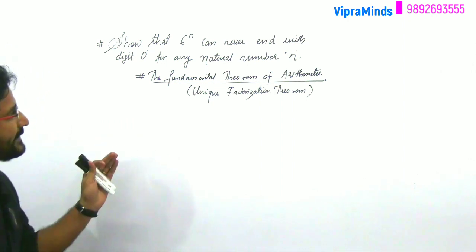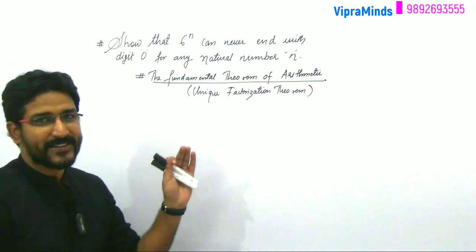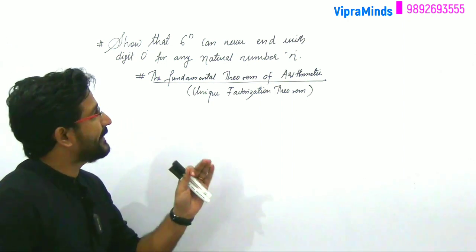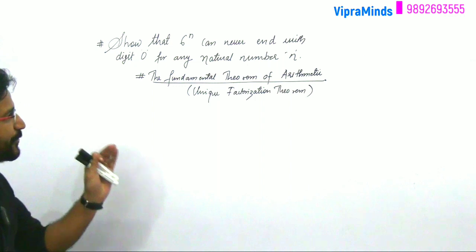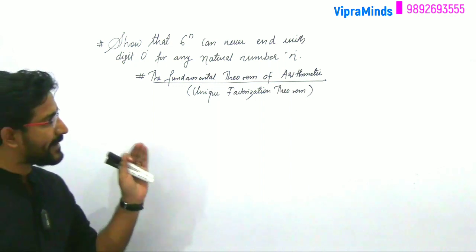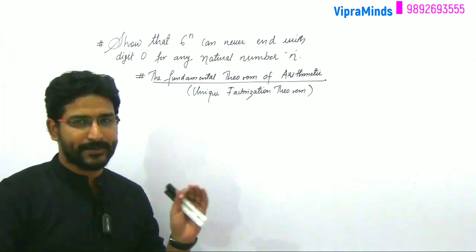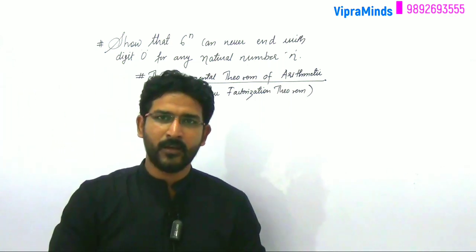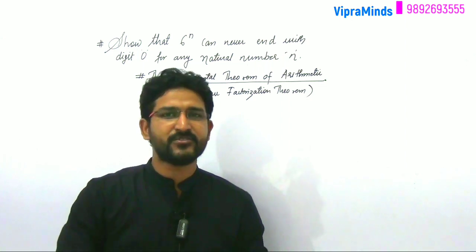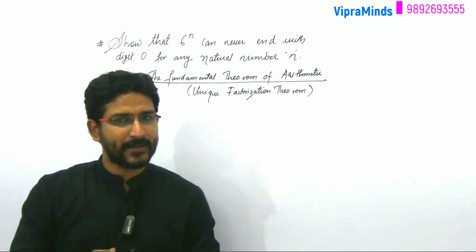Show that 6 raised to n can never end with digit 0 for any natural number n. It's a very simple question. Normally this question comes for 2 marks.